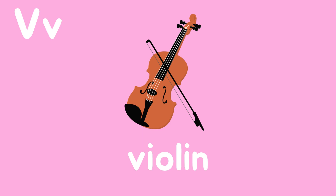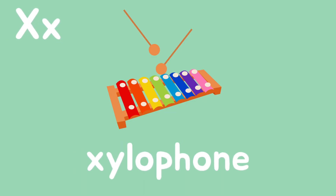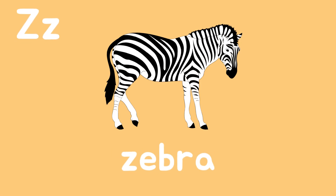V is for Violin. W is for Wheel. X is for Xylophone. Y is for Yo-Yo. Z is for Zebra.